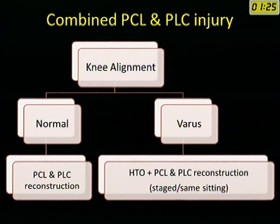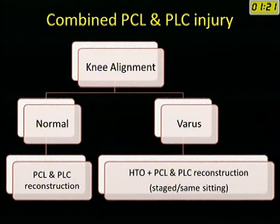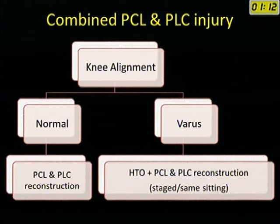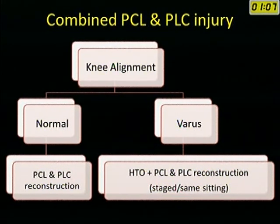The algorithm for combined PCL and posterolateral corner injury: first check knee alignment. If normal, proceed with PCL and posterolateral corner reconstruction as described. If there is varus, perform HTO. The ligament reconstruction can be done at the same setting as HTO or after the patient recovers from the HTO.